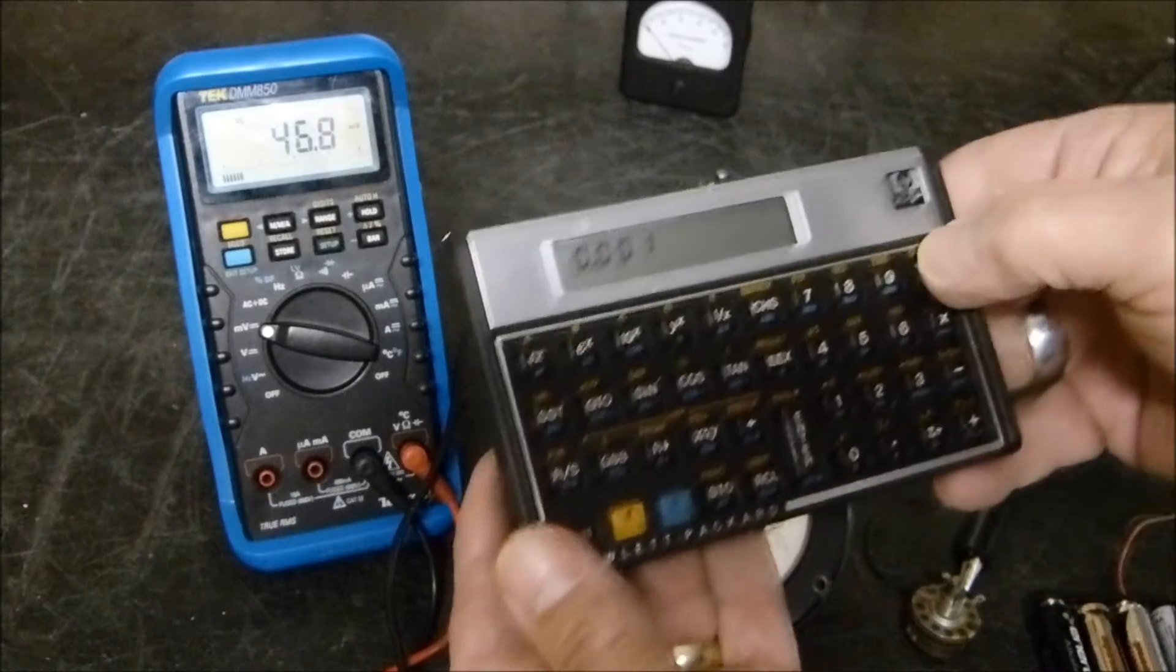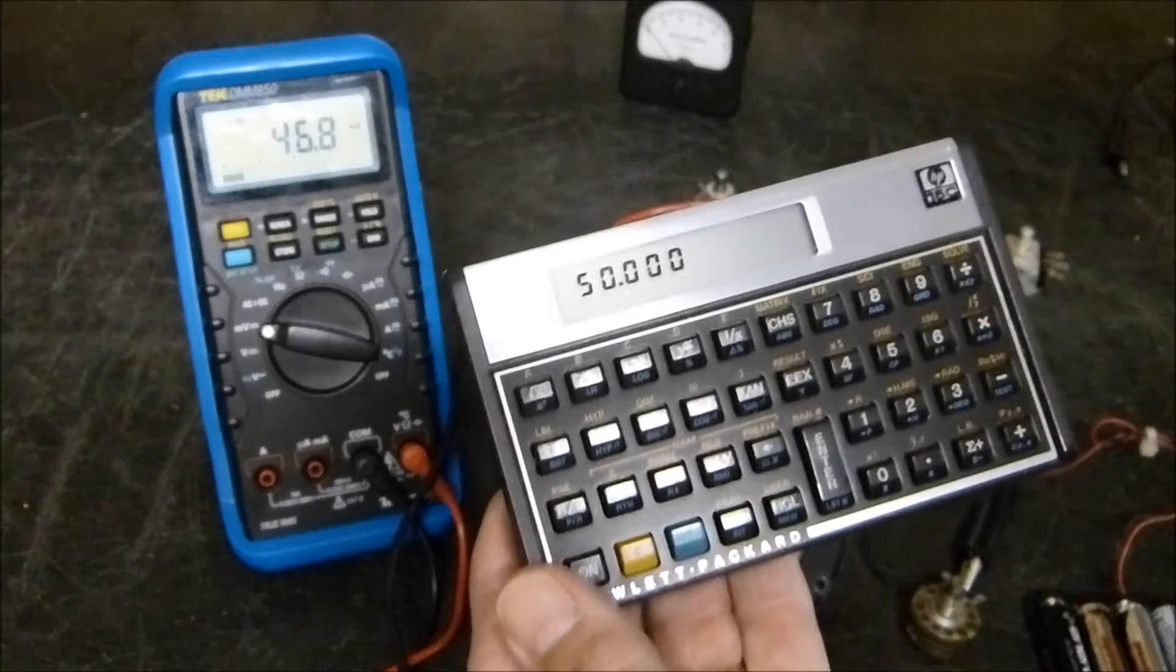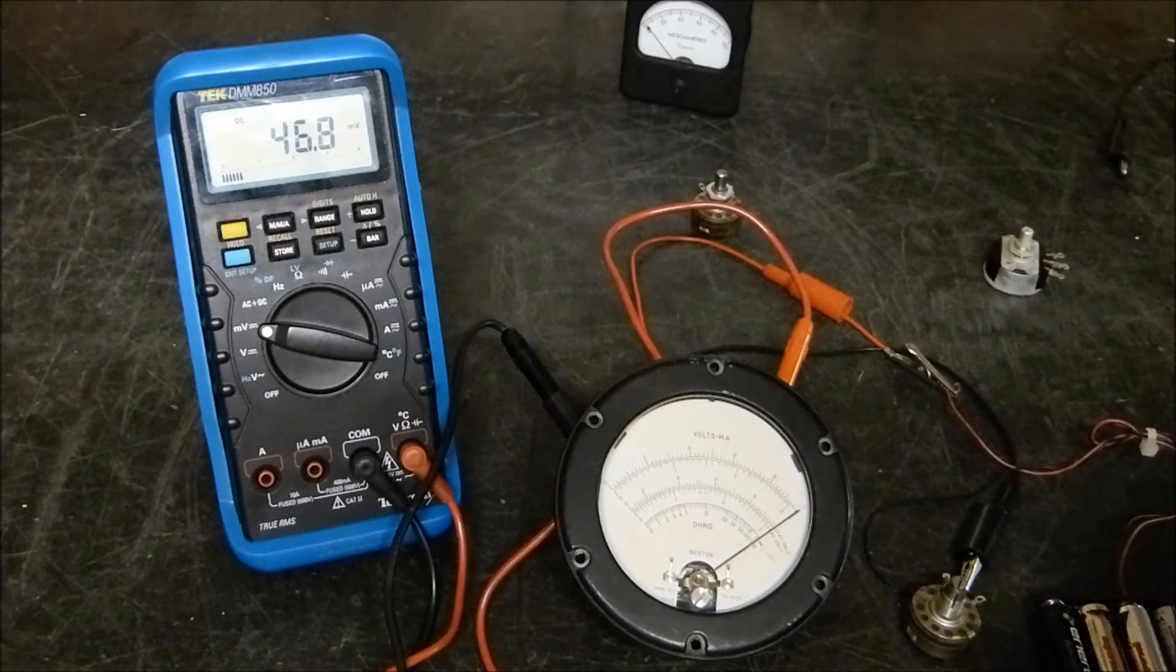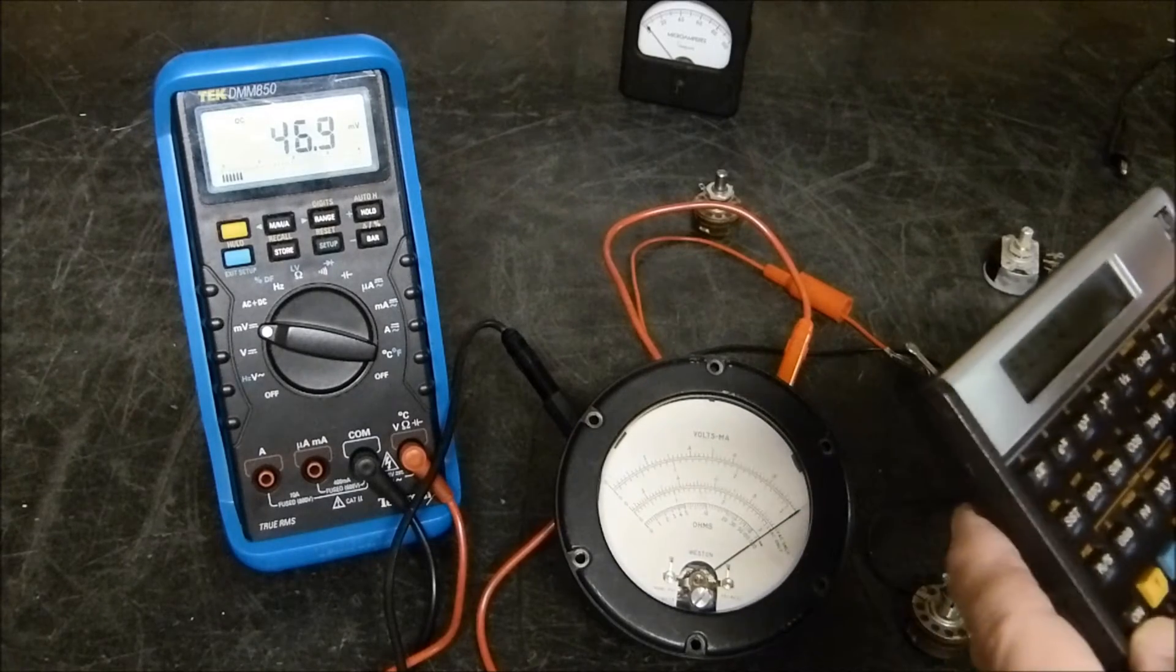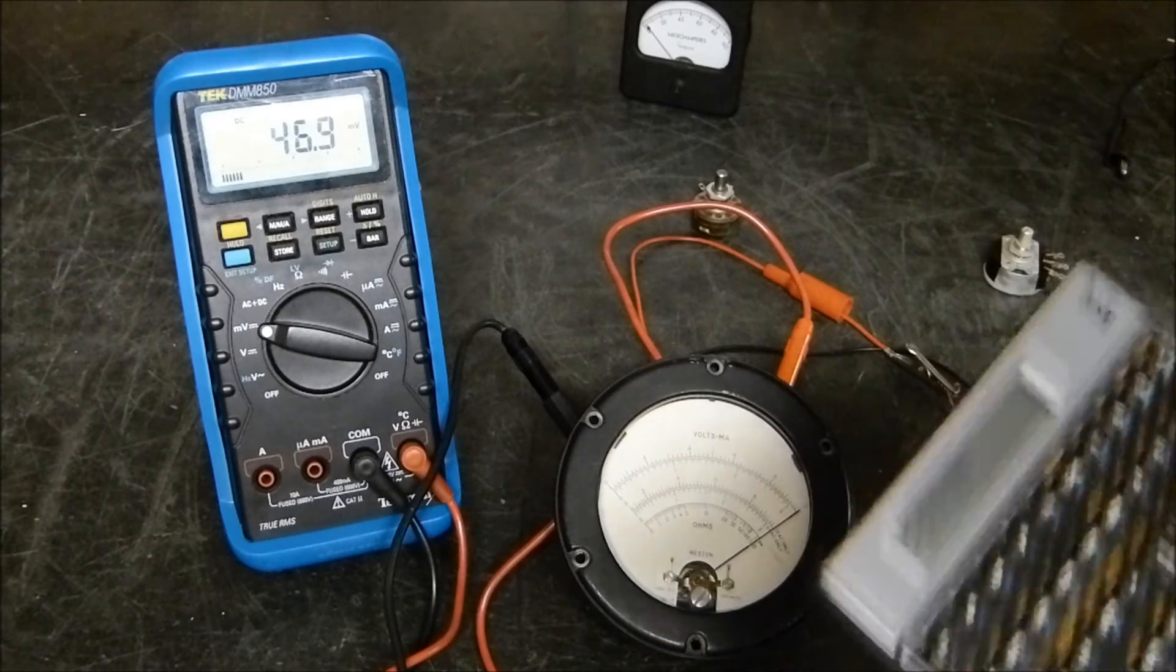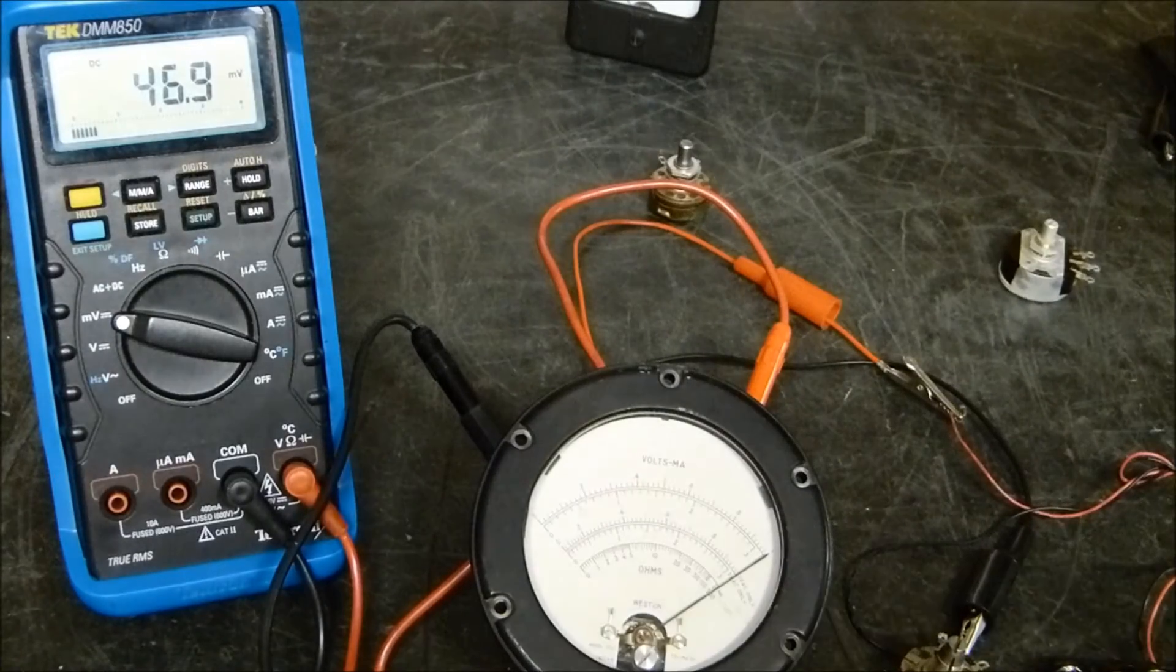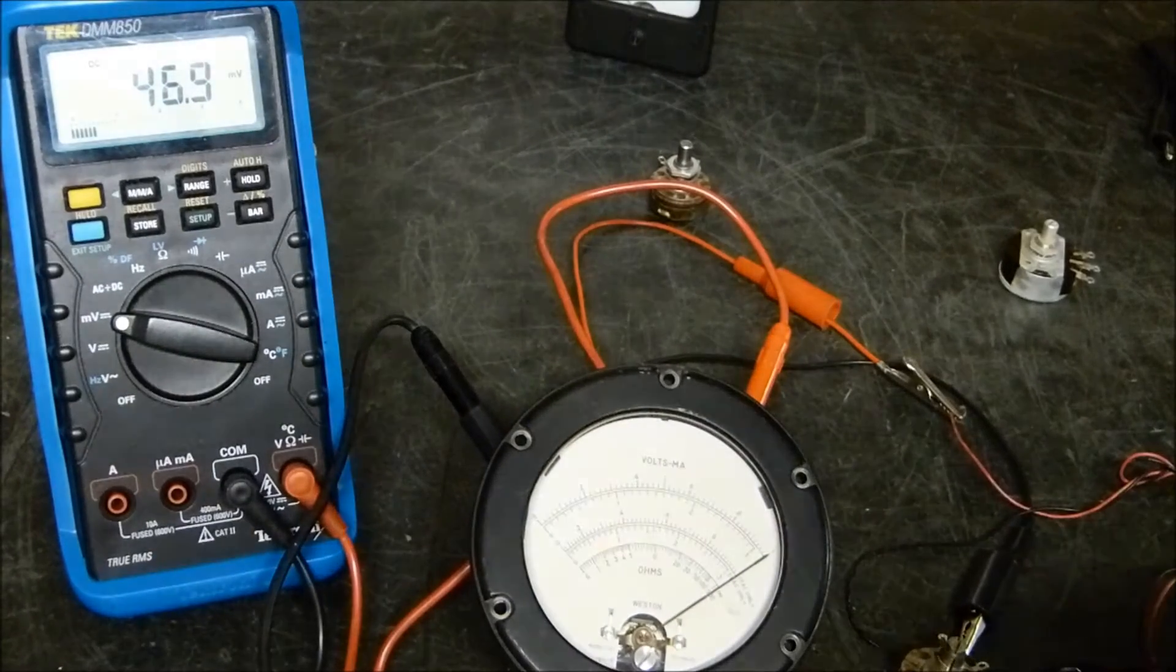Now if you want to know its ohms per volt, it takes 50 millivolts to drive it. Let me see, its ohms per volt - I'm gonna, I'm screwing this up. Okay, back to the calculation. It's pretty hard sometimes making these videos to not have every once in a while a duh moment.